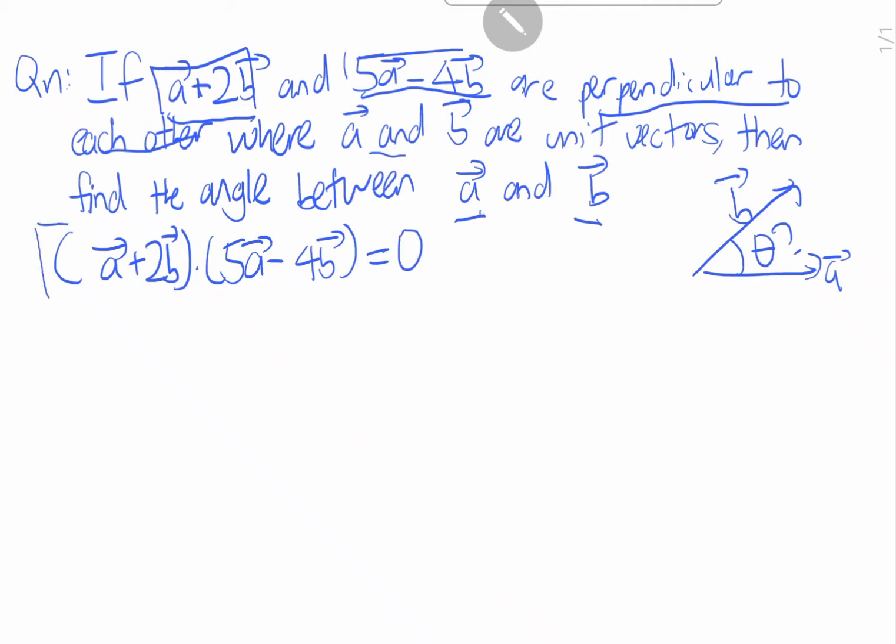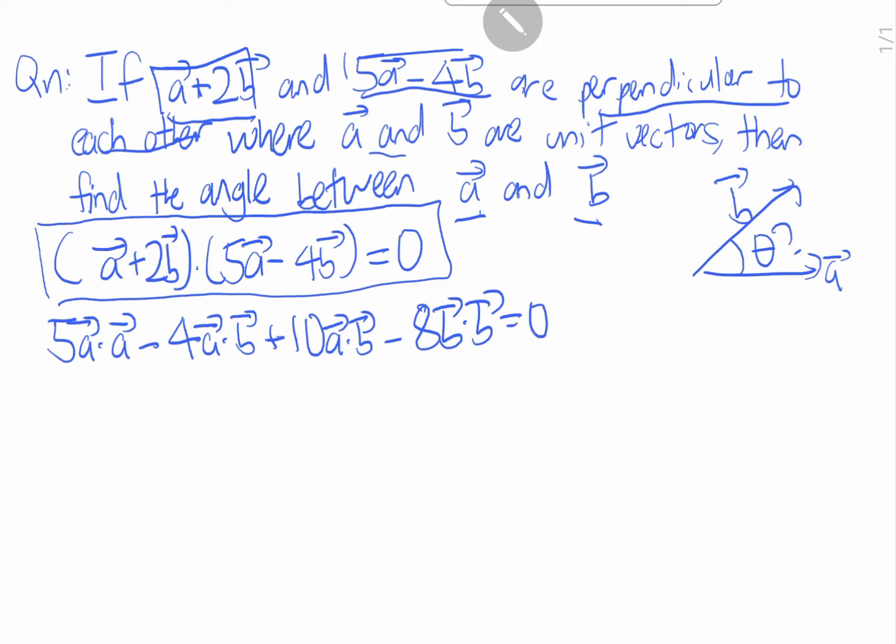This is what we have learned in our previous video if these two are perpendicular. So now let's expand it. This means that 5A dot A minus 4A dot product of B plus 10A times B minus 8B B equals to 0.